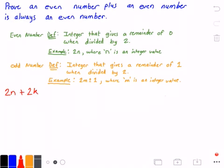All right, so now we will go ahead and factor out that 2. So we get 2 times (n plus k), and n plus k is an arbitrary integer value because n is an arbitrary integer value and so is k.